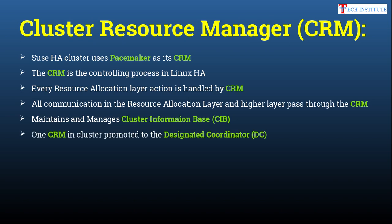One CRM in the cluster gets promoted to the Designated Coordinator. All nodes have their own version of CRM running, and one of the nodes gets promoted to be the Designated Coordinator. The daemon for CRM is 'crmd' — if this daemon is not running, cluster communications will not happen properly. If you do a Corosync restart, this daemon also gets restarted. Also, Pacemaker has its own daemon called Pacemaker, so you can do 'systemctl start/stop/restart pacemaker'.